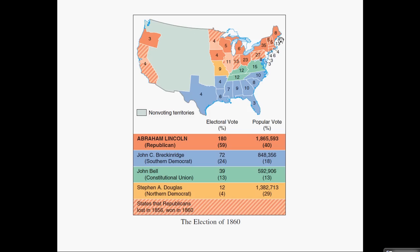The 1860 election is such a good example of sectionalism. Every free state — every state that did not have slavery — supported Lincoln. Missouri voted for Stephen Douglas, who was a Northern Democrat. He supported popular sovereignty but really did not want slavery to end. He was trying to appease both sides, but by the number of electoral votes he received, it really didn't work. The only state that supported him was Missouri.